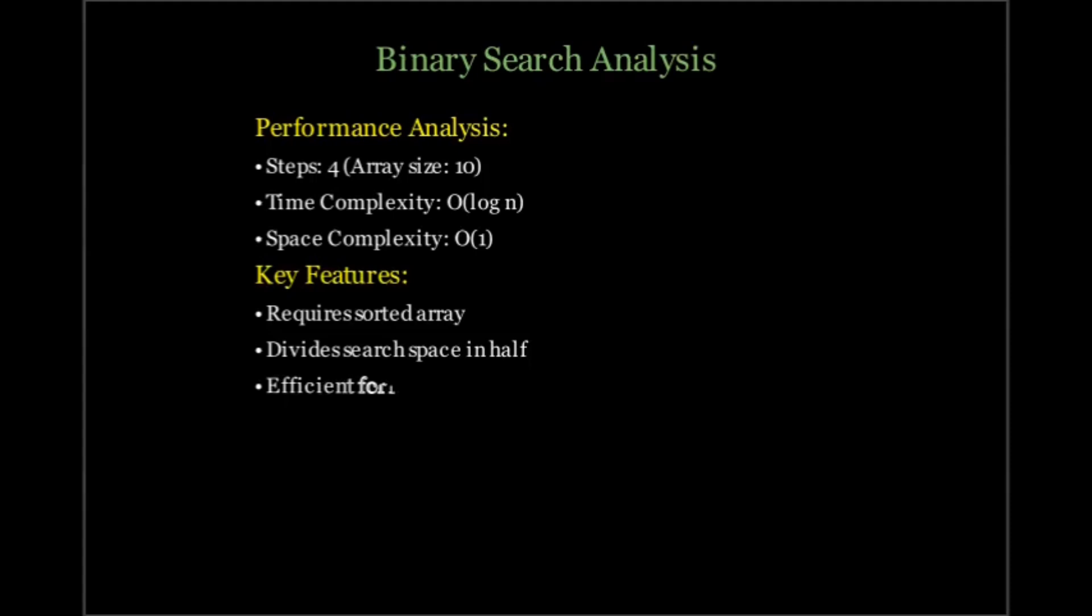Binary search is blazing fast. Even for 1 million items, it takes just 20 steps to find the target because it halves the search space every time. So it's very efficient for large datasets. And it has low space complexity. It uses constant space complexity O(1) and doesn't need any extra memory to work. And it's perfect for sorted arrays.